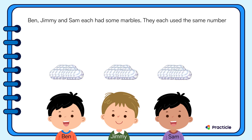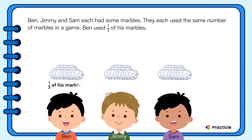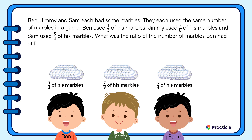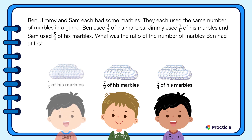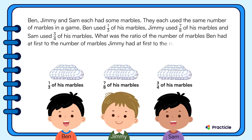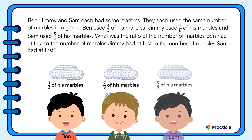They each used the same number of marbles in a game. Ben used one-third of his marbles, Jimmy used seven-eighths of his marbles, and Sam used three-quarters of his marbles. What was the ratio of the number of marbles Ben had at first to the number of marbles Jimmy had at first to the number of marbles Sam had at first?